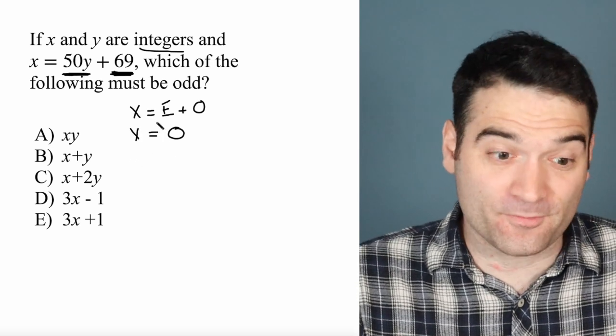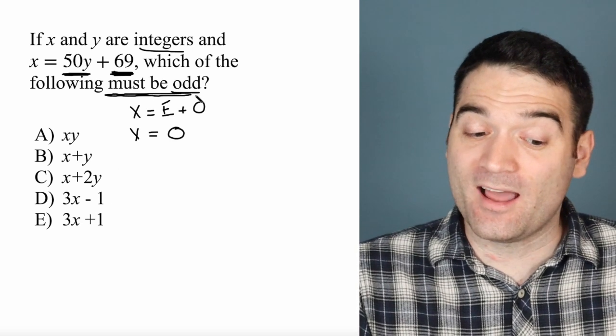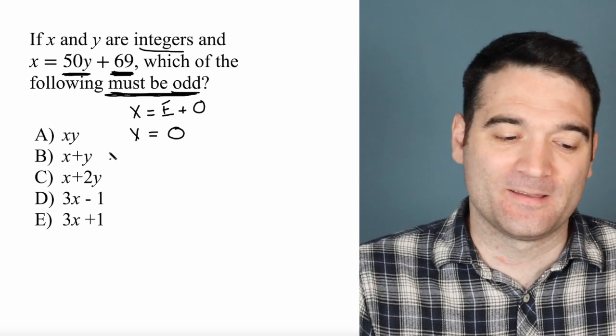And now, with this information, I can take a look at these and determine which answer option has to be odd. Not is possibly odd, but must be odd.